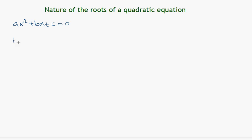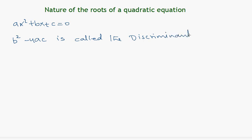By definition, b squared minus 4ac is called the discriminant of the equation ax squared plus bx plus c equals zero. The discriminant is denoted by the symbol delta.